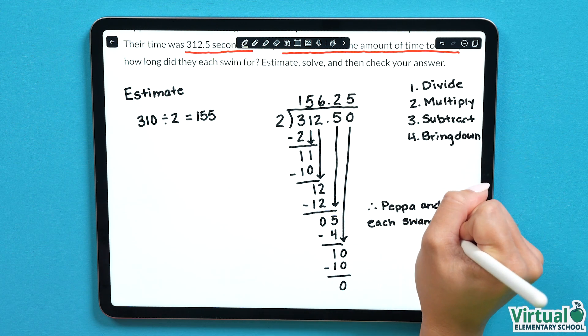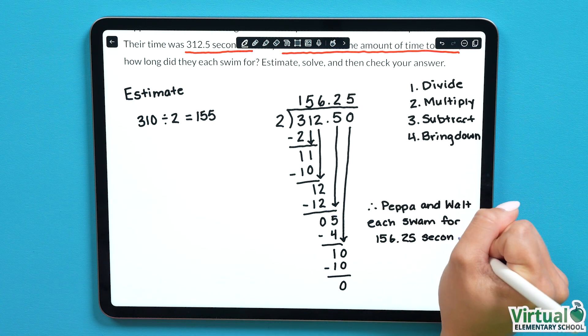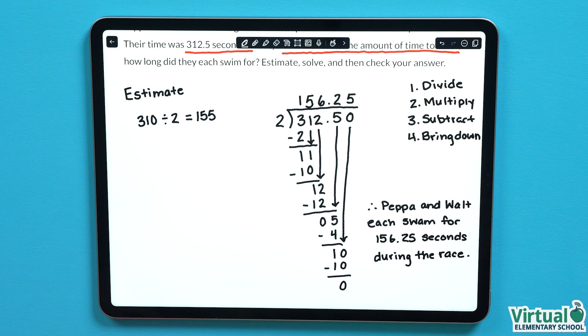After checking, we need to write a therefore statement to complete our question. Therefore, Peppa and Walt each swam for 156.25 seconds during the race. That's how we can divide decimals in word problems.